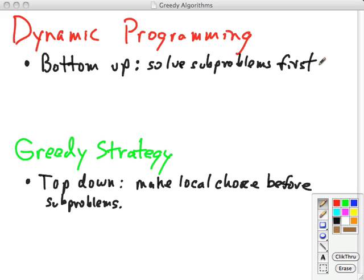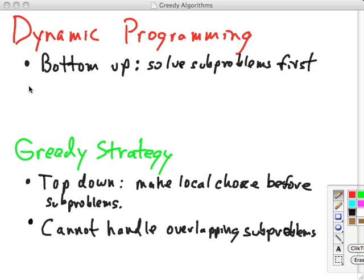So what are some of the consequences of this? Well, there's the assumption here with the greedy strategy that you can make a local choice and it doesn't matter how you solve the other problems. So it cannot handle overlapping sub-problems that are interdependent on each other. Whereas dynamic programming, of course, exploits the overlapping sub-problems for efficiency.